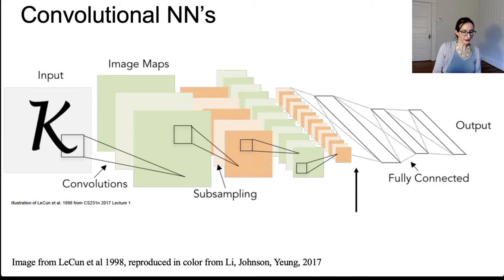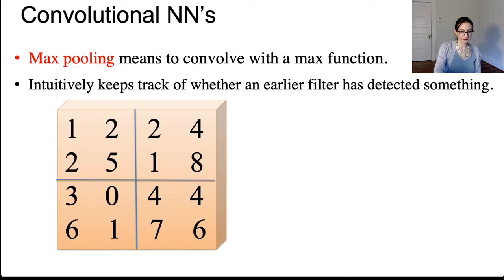Now, a nice way to understand why these filters act as summarizations of what's in the layer before is to think about max pooling. Okay. So max pooling means to convolve with a max function. So intuitively, it keeps track of whether an earlier filter has detected something.